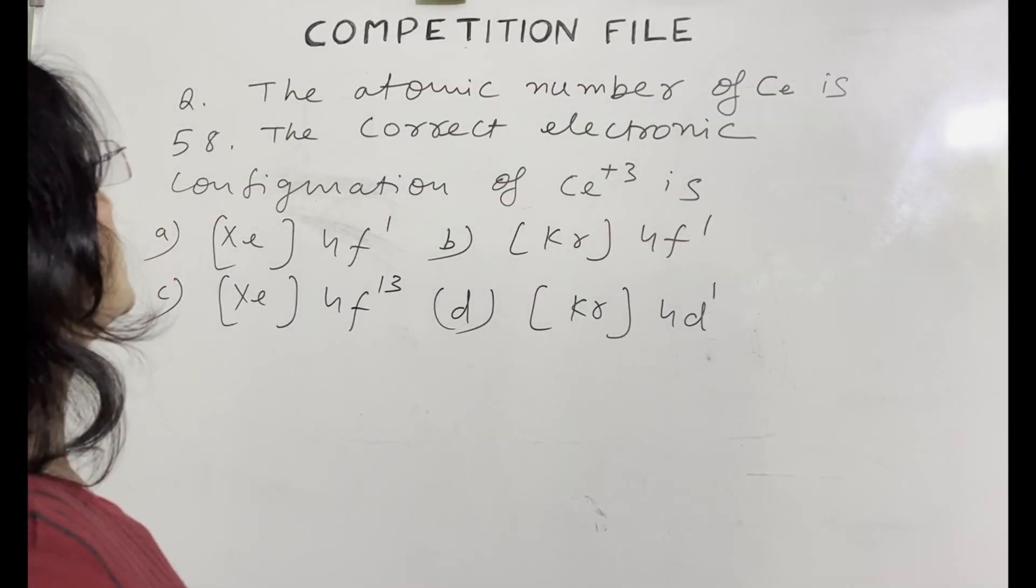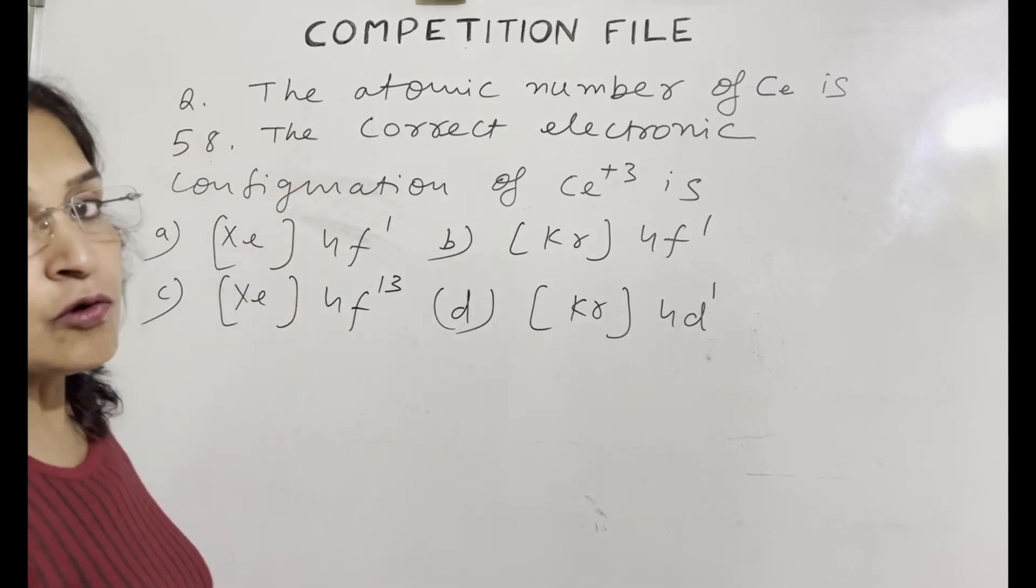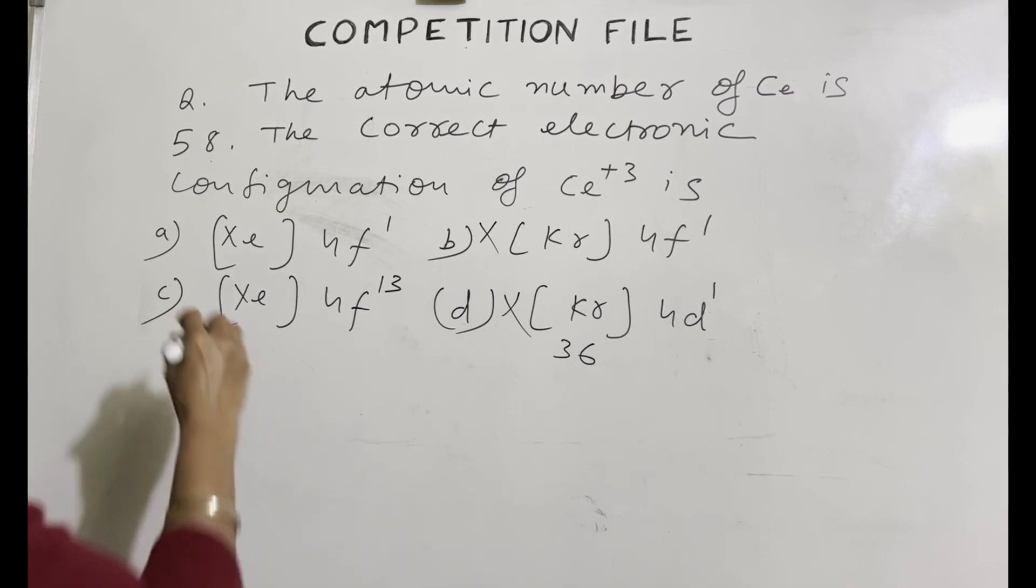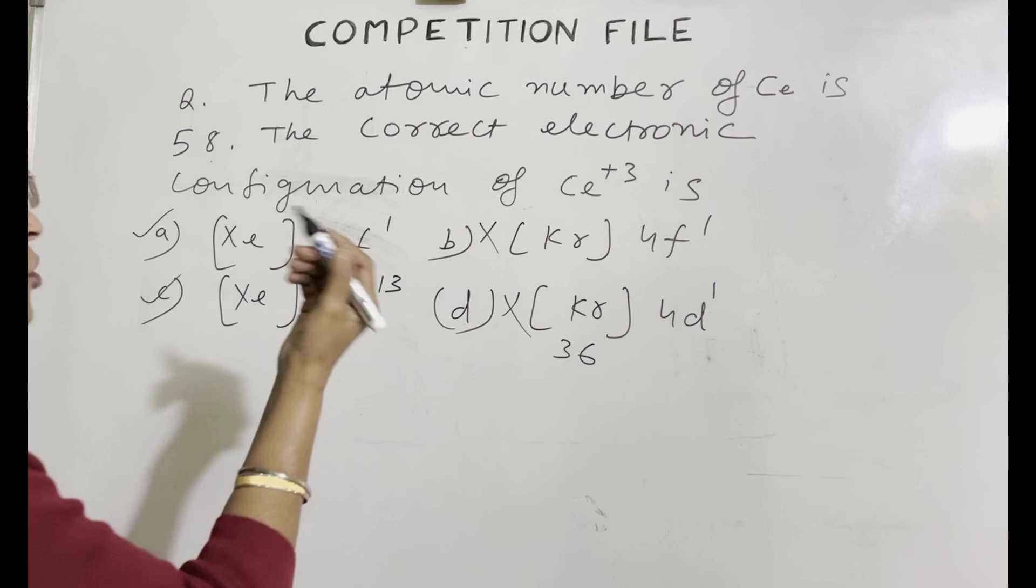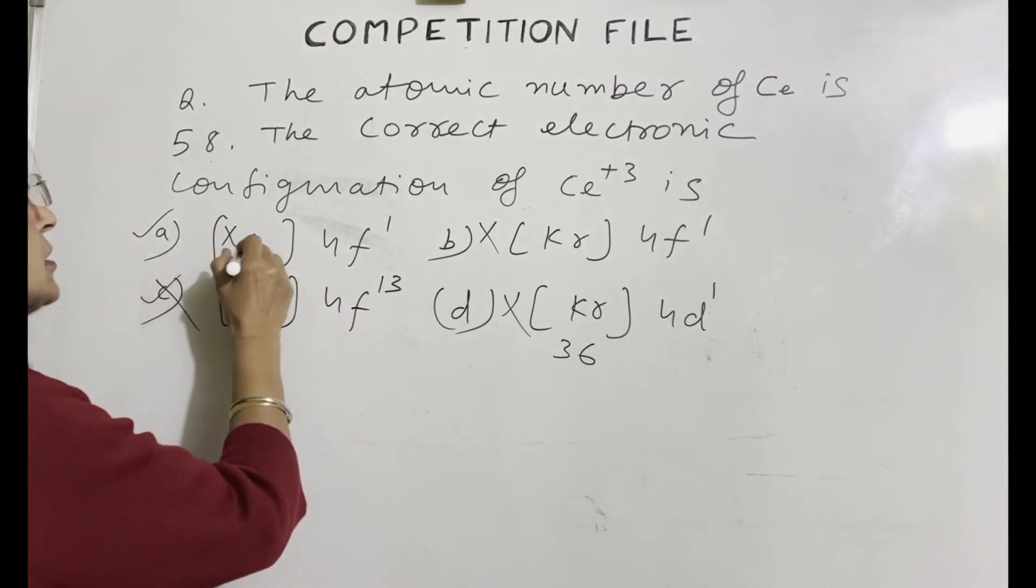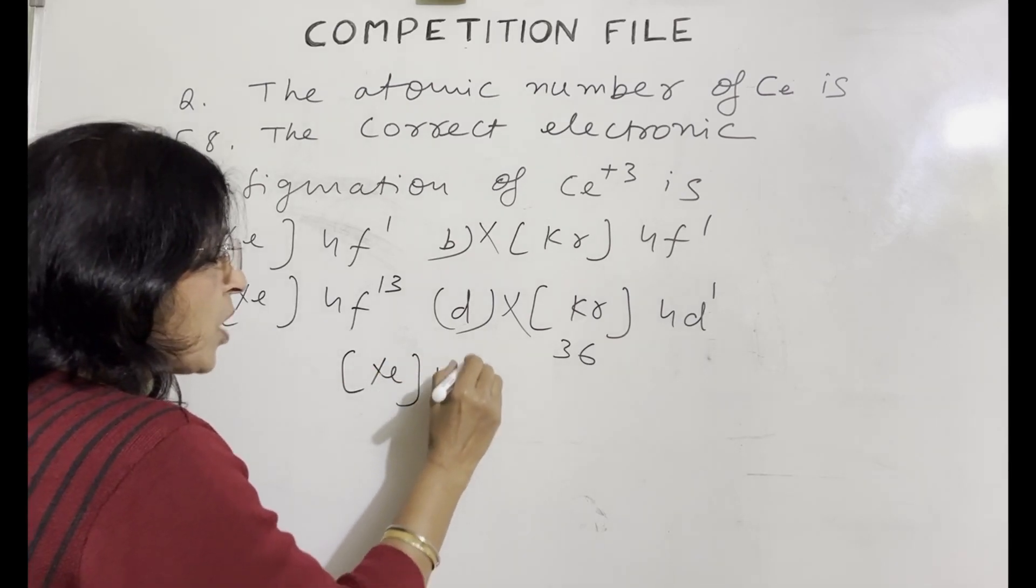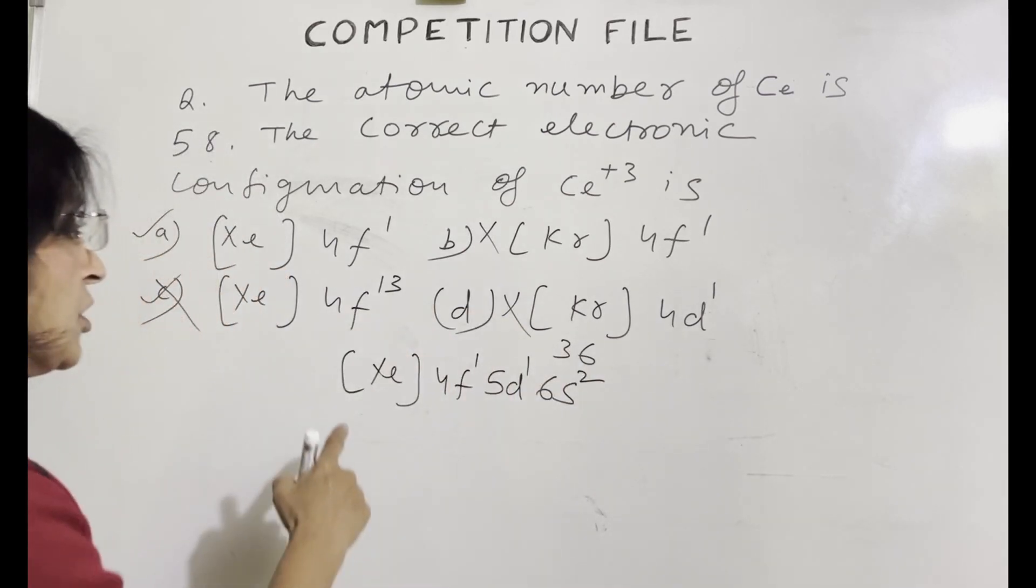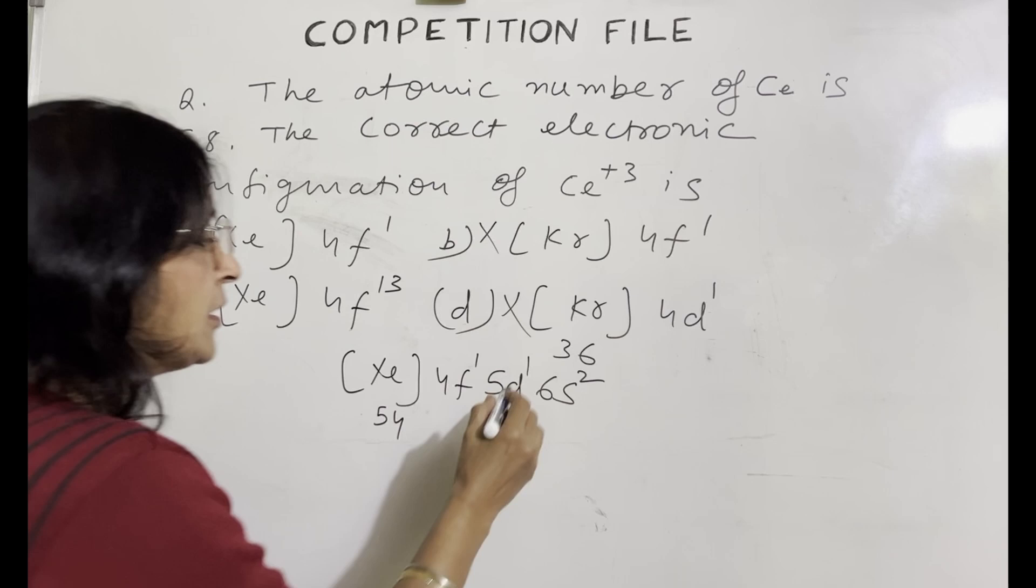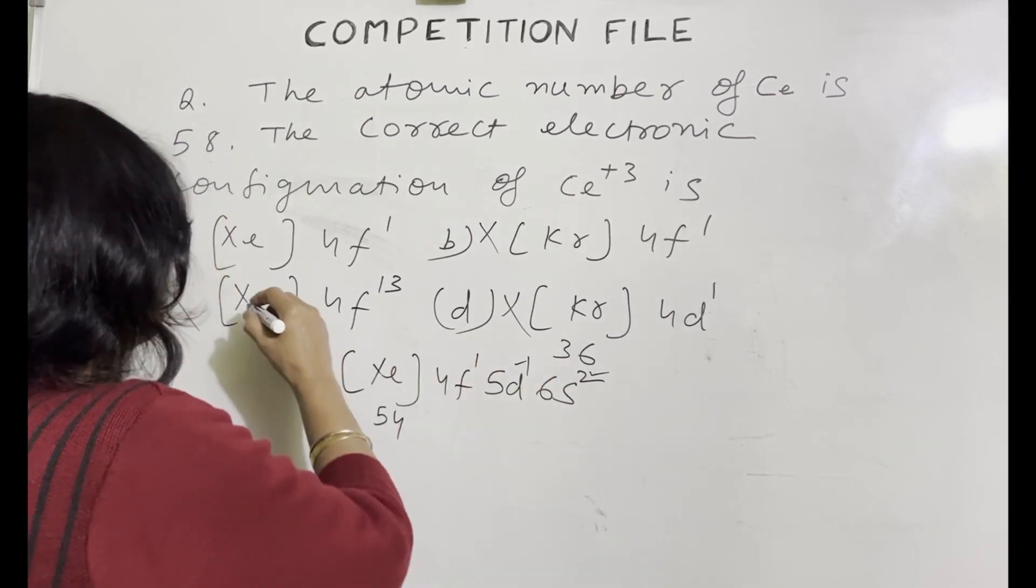Next question is the atomic number of cerium is 58. The correct electronic configuration of cerium 3 plus ion is. See atomic number is given as 58 and the atomic number of krypton is 36. So these two choices cannot be at all. These two choices remain. Cerium is the first lanthanoid. So 4f 13 cannot be at all. 4f 13 means in the lanthanoid series, it is the second last element. So this also cannot be the answer. So answer is this one. Xenon 4f 1. The electronic configuration of cerium is xenon 4f 1, 5d 1, 6s 2. So xenon's atomic number is 54, 55, 56 and 58. So in forming cerium 3 plus ion this electron and this electron will be removed as outermost and if outermost electrons are not sufficient then penultimate shell. So answer will be this one. A.